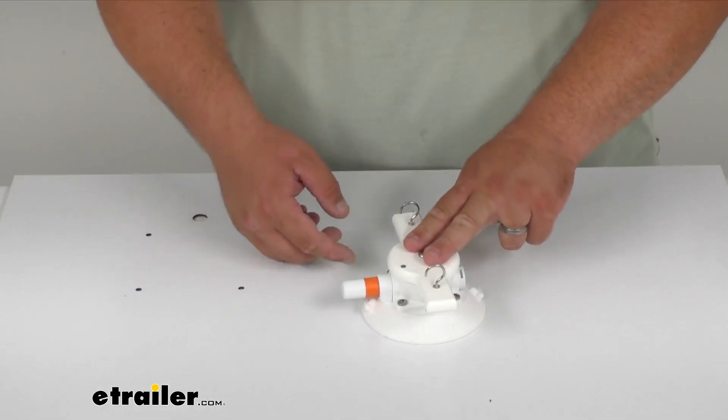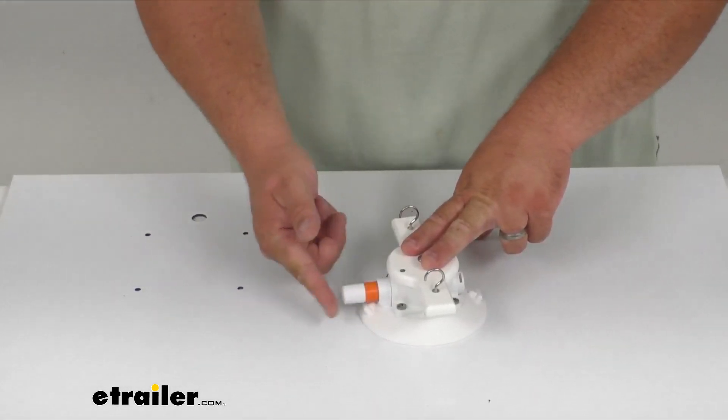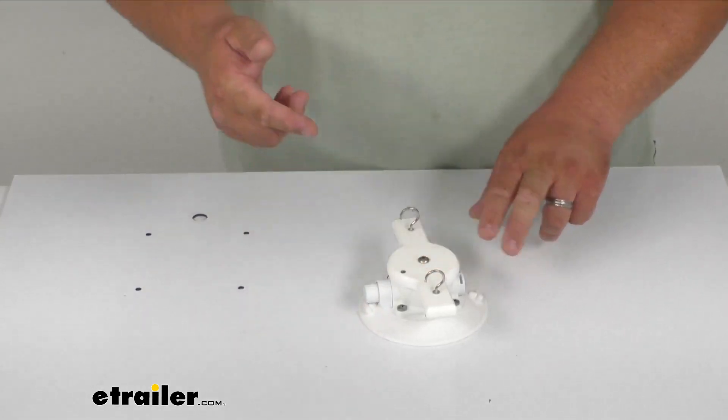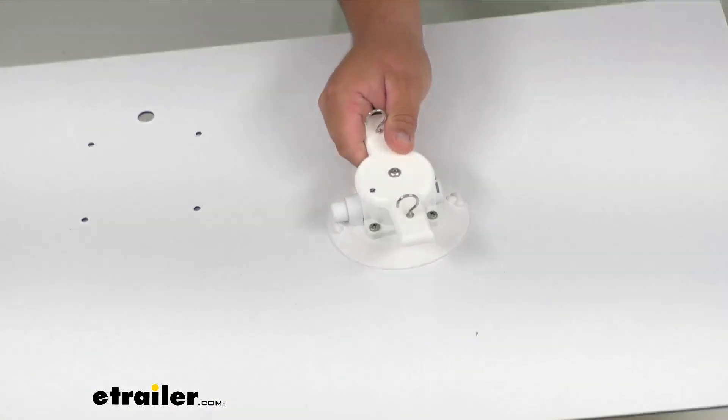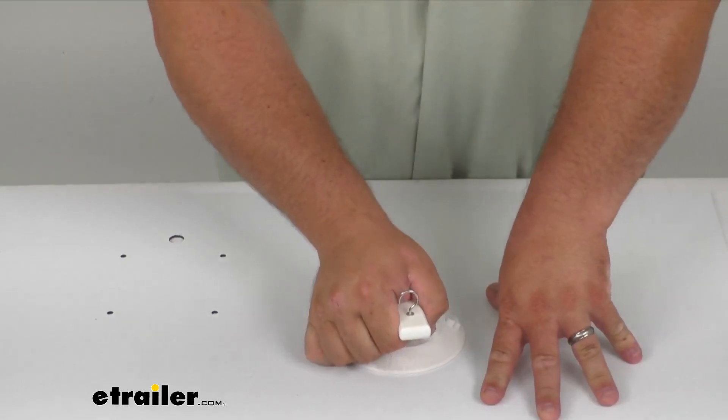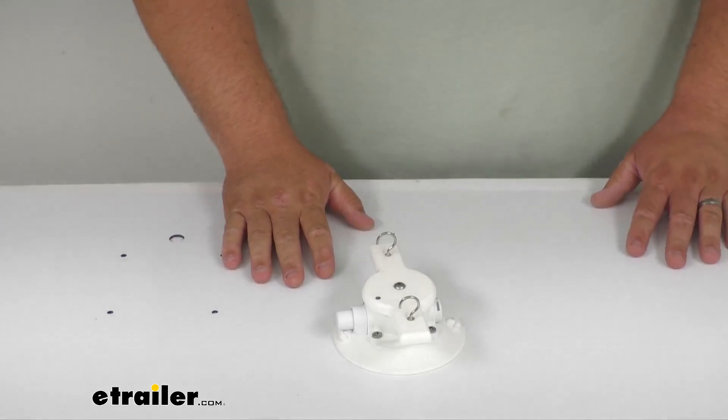To pump it up, you simply push a little pressure and just pump until the orange indicator disappears, showing you that all the air has been vacuumed out. Once you have that, it's not going anywhere, folks. It's super strong, super tight. It's actually rated at a whopping 120 pounds of pull force. You're not going to get this thing to go anywhere anytime soon.